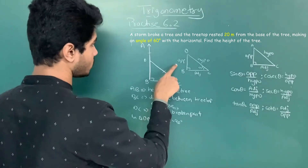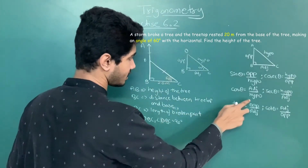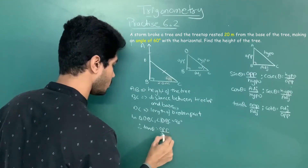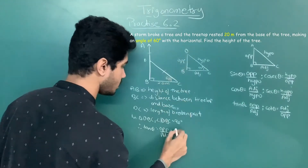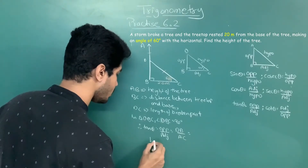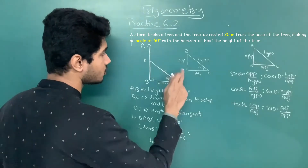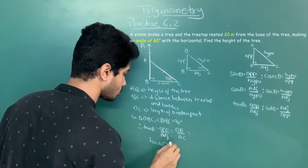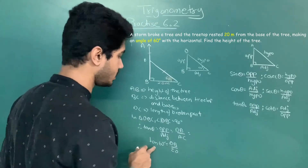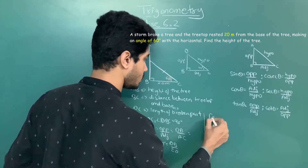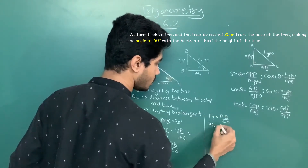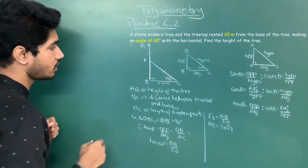We need to find the opposite (DB) and we are given the adjacent (BC = 20m). So we use tan theta, which equals opposite upon adjacent. Therefore tan 60 equals DB upon 20. Tan 60 is root 3, so root 3 equals DB over 20, giving DB equals 20 root 3.